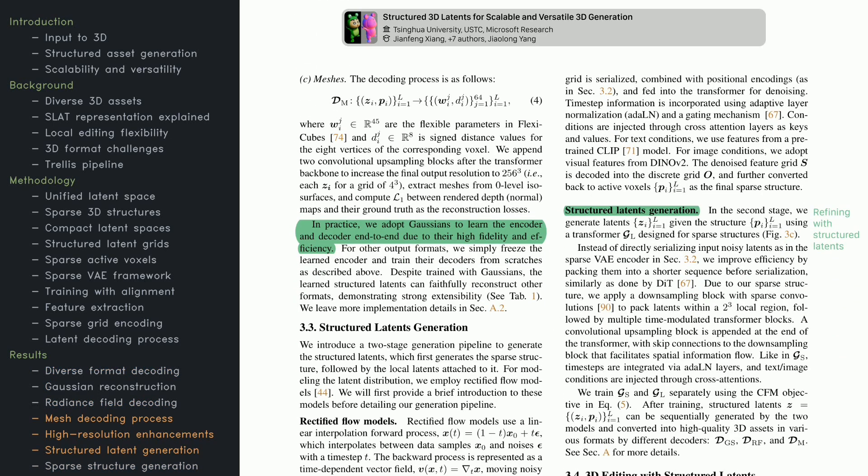Decoding into meshes works in a similar structured way. The system predicts parameters for voxelized shapes, estimates distances, and extracts a clean surface. Upsampling blocks increase resolution, matching ground truth depth maps. Gaussians are used to train encoders, thanks to their high fidelity, while the other formats rely on frozen encoders that specialize the decoders. After decoding, the method's generation process kicks in. First, it makes a sparse structure that outlines the object's overall shape. Then local latents refine that shape with high detail features. Text or image prompts guide the outputs through cross-attention.